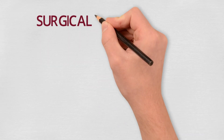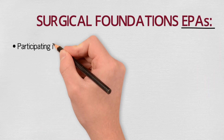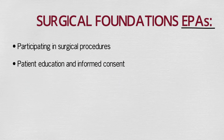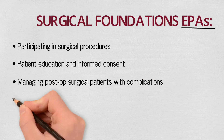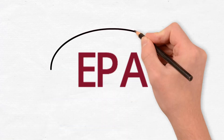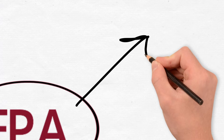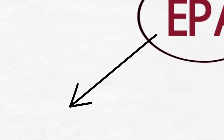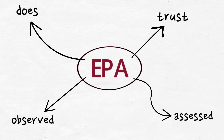Let's review some concrete examples. These are some EPAs for surgical foundations: participating in surgical procedures, patient education and informed consent, managing post-op surgical patients with complications, and fundamental aspects of surgical procedures. Each EPA is a unit of work and outlines something a surgeon actually does. You could also imagine your resident being trusted to function independently for each of those activities, and so it's something upon which a learner could be both observed and assessed.